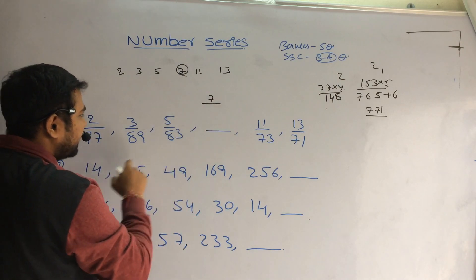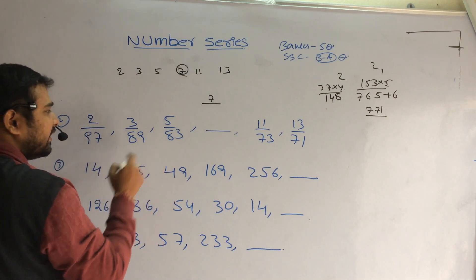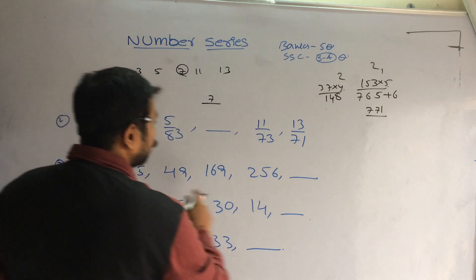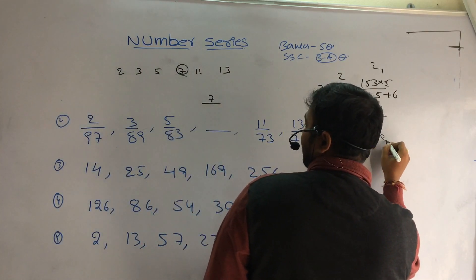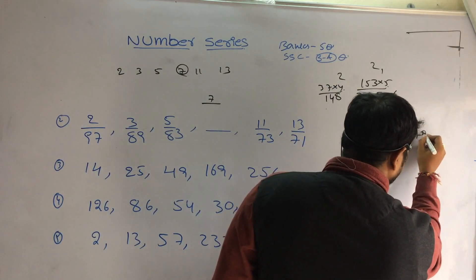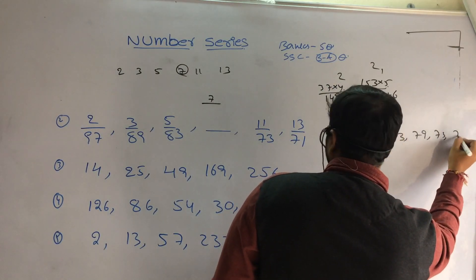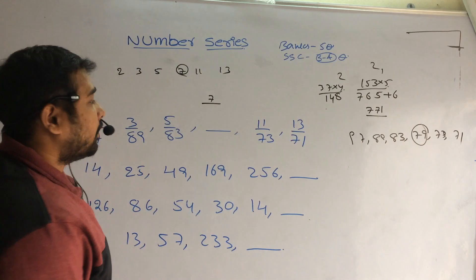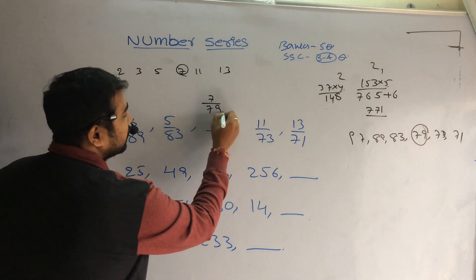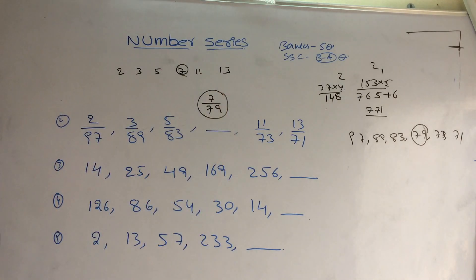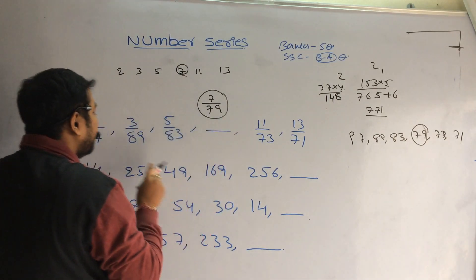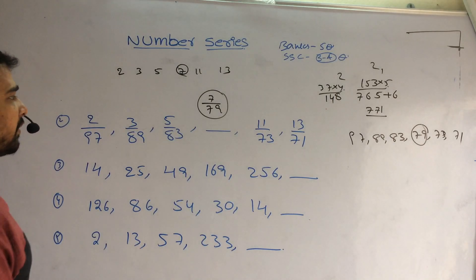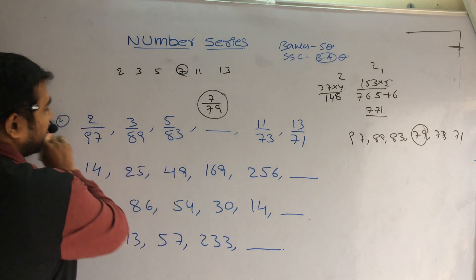97, 83, 48. 97, 89, 83, 73, 71. These are also prime numbers. So after 97, 89, 83, the next prime number is 79, then 73, and 71. So the missing number is 79. These are also prime numbers. So numerator and denominators are prime numbers — numerators are increasing prime numbers and denominators are decreasing prime numbers.